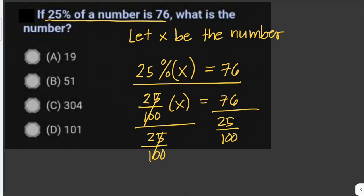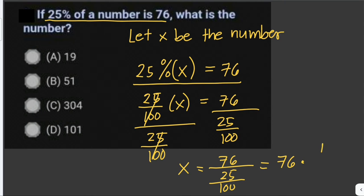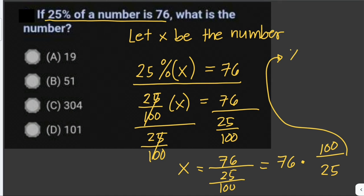The 25 over 100 on the left cancels out, giving us x equals 76 divided by (25 over 100), which equals 76 times 100 over 25. Since 100 over 25 equals 4, we get x equals 76 times 4, which equals 304. So our answer is letter C.